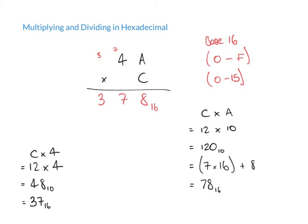So 4A multiplied by C gives us 378 — and it's important to remember this is a hexadecimal number. That's not 378 the decimal number you'd read ordinarily; it's still hexadecimal. We can convert it back to decimal if we want, and there's a video where we talk about converting from hexadecimal to decimal.